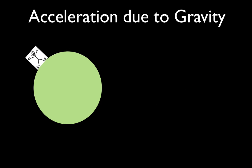In a previous video I showed you how to calculate the weight of a person on Earth, and we did that using two different equations. First, we used Newton's second law: F equals MA, which we write for weight as FG — the force of gravity — equals the mass of the person, which I've designated mass 2, because the Earth is going to be mass 1, times G.